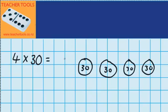Now I know four groups of 30 is 120. Let's see how I can use that to help me answer this question here. Four groups of 32. So I'm going to think to myself, how does four groups of 30 look different from four groups of 32? And the answer is, in each of these groups they have two more.